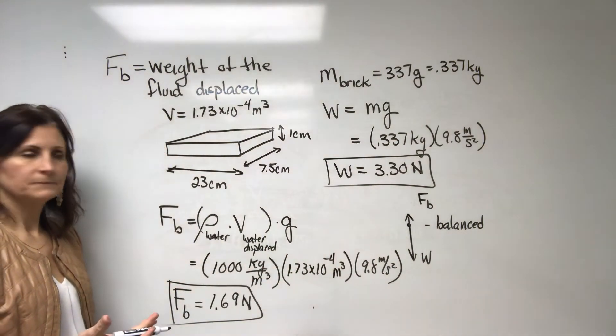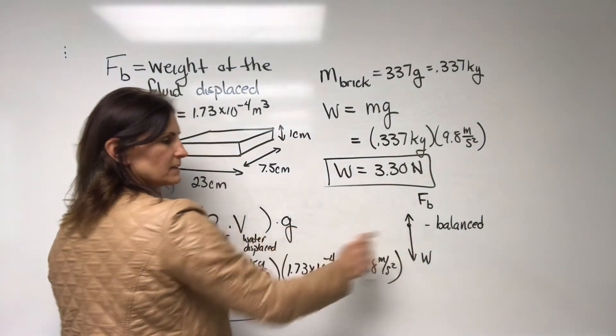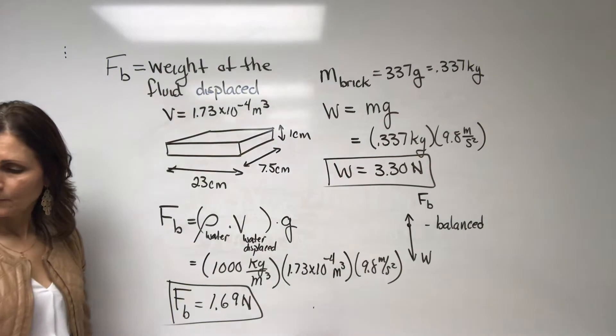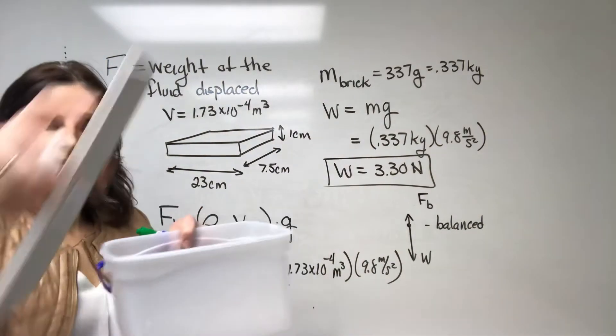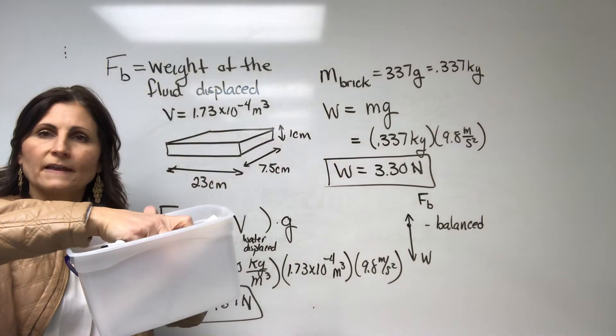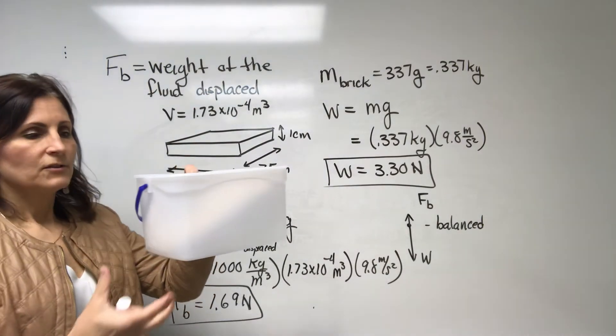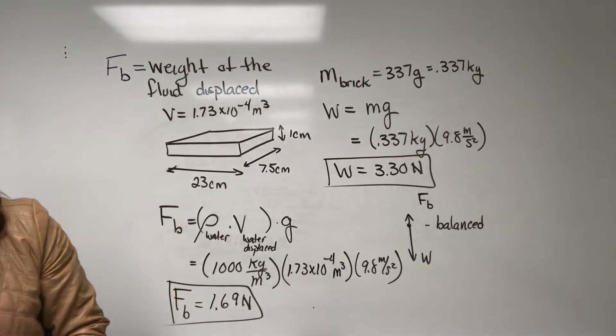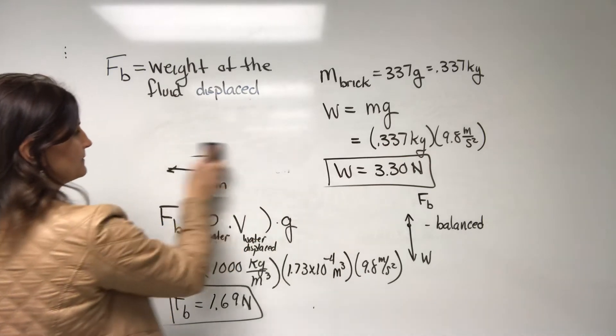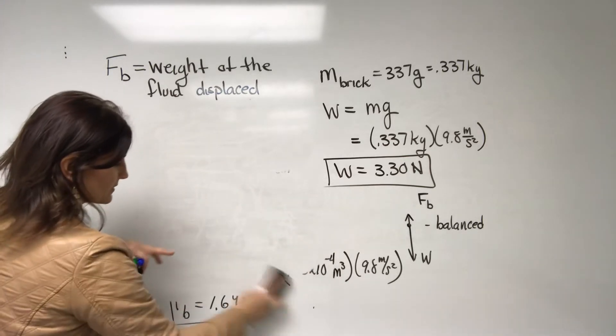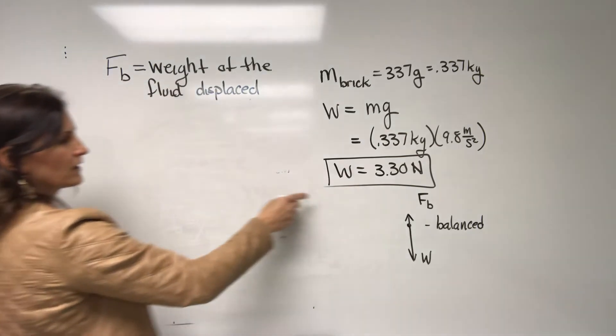So what do we need to do? How do we make the buoyant force more so that this matches the weight? We put it into something that allows it to displace enough water, right? So we're going to submerge it into there and it's going to displace now even more water. So I measured that. So you can go back to the video and take a look at that. So if we were to redraw the picture now, our brick hasn't changed, right?